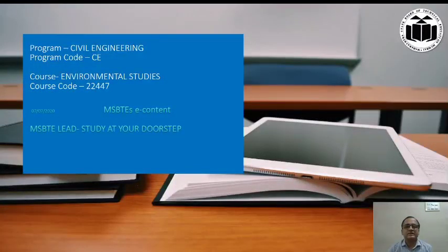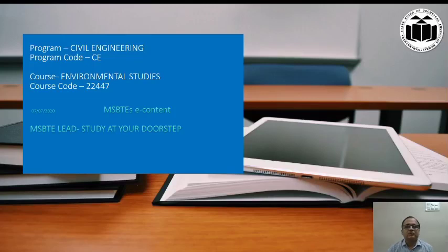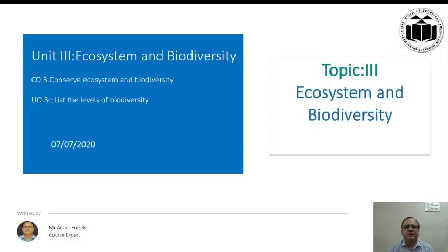Dear student friends, welcome to the digital platform of e-content provided by MSBTE, i.e. Maharashtra State Board of Technical Education. Today's subject of discussion is Environmental Studies, whose course code is 22447. The topic of discussion is Unit Number 3, i.e. Ecosystem and Biodiversity.